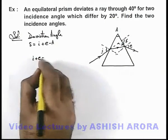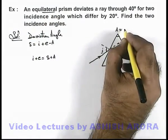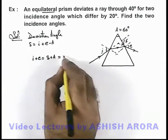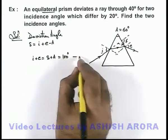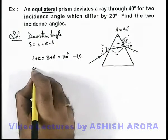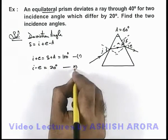i plus e is equal to delta plus A, and as for equilateral prism, the prism angle A is equal to 60 degrees. So this will be 40 plus 60, this is 100 degrees which is equation 1. And we are also given that the difference of the two incidence angles, i minus e, is equal to 20 degrees, say this is equation 2.